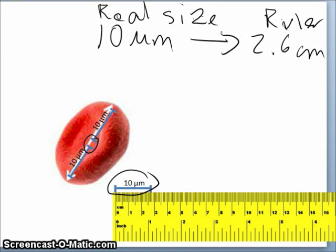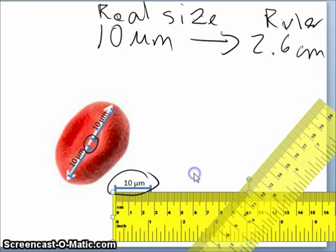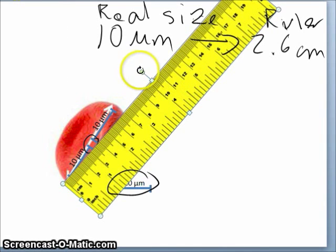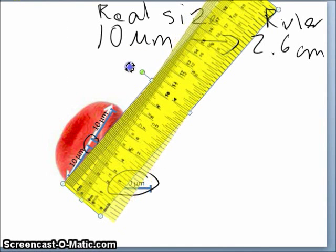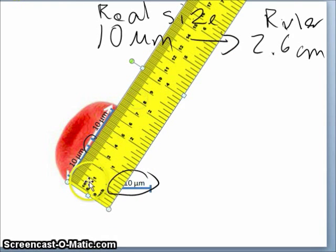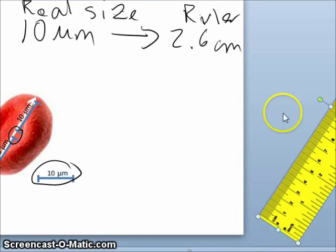And then I can take this same ruler maybe tilt it a little bit here, stuck it on this line and measure. Ok it is 1, 2, 3, 4, 5, 6, 6.5, 6.6. Ok I'm going to throw this ruler around now, oh no, oh no what happened.